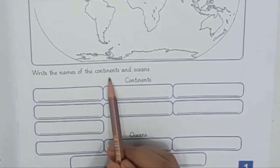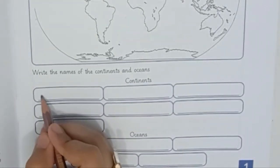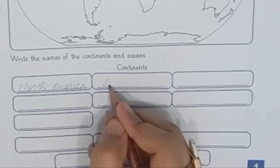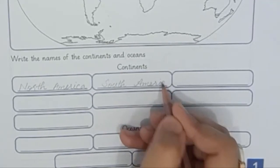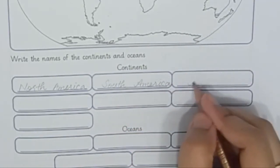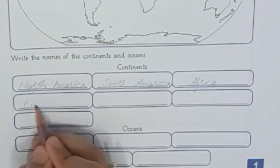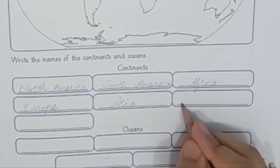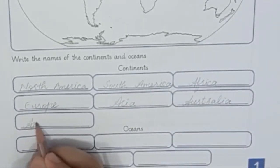Now we will write the names of the continents and oceans. Number 1 is North America. Number 2 is South America. Number 3 is Africa. Number 4 is Europe. Number 5 is Asia. Number 6 is Australia. Number 7 is Antarctica. These are our 7 continents.